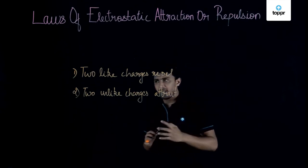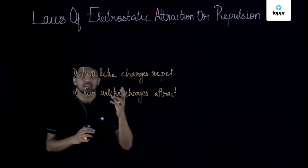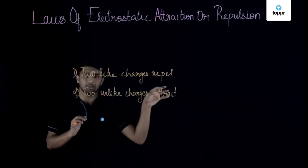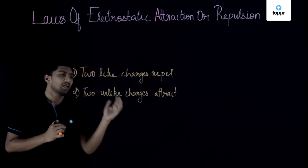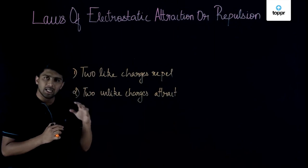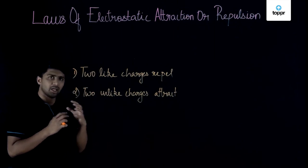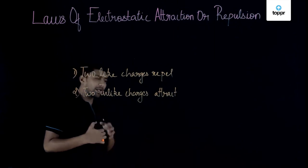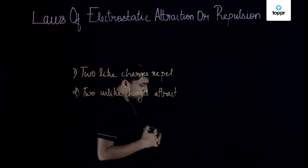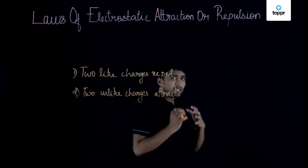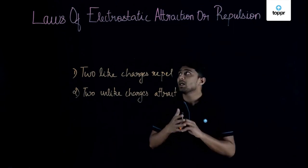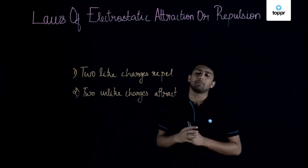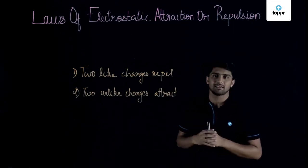Which means if two like charges are brought nearby, they will repel each other. And if two unlike charges are brought nearby, they will attract each other. This is what the laws of electrostatic attraction or repulsion state.